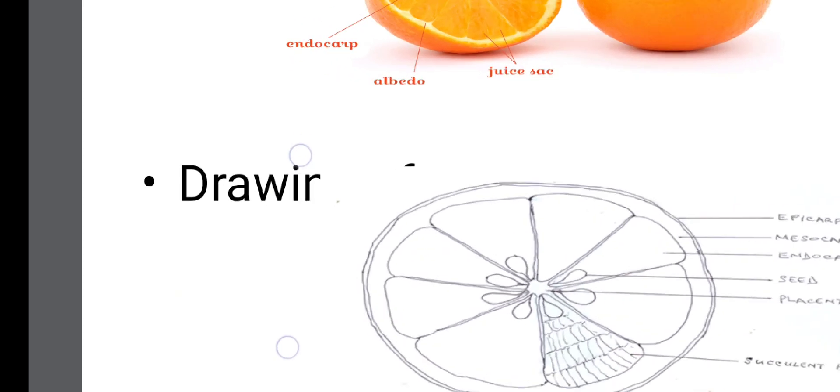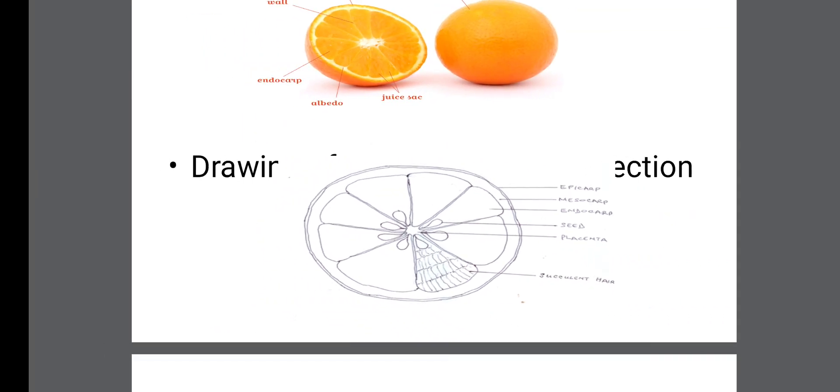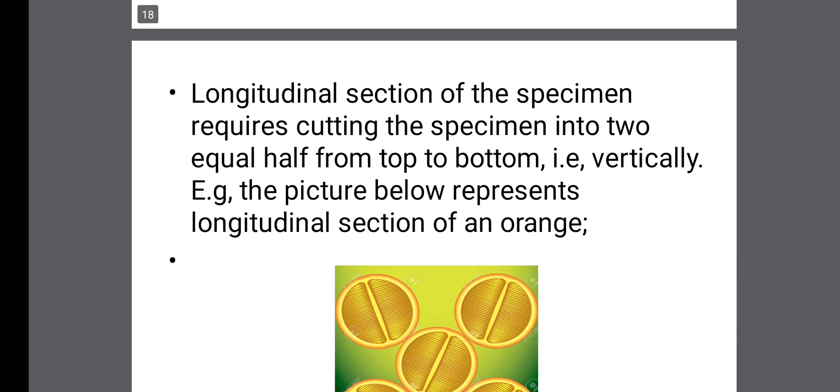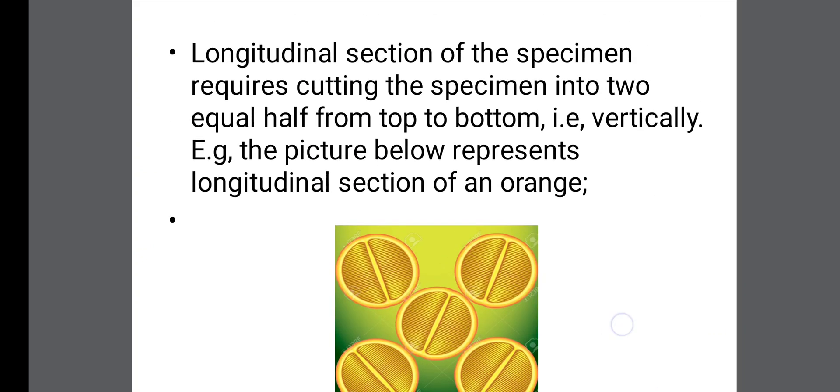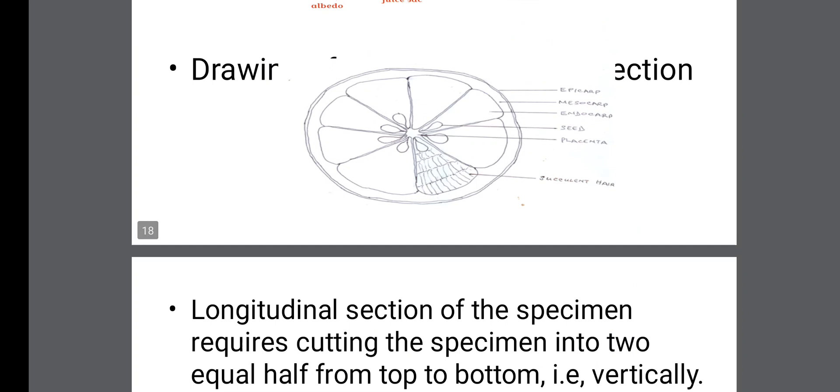Those that are interested in the diagram of an orange, of the transverse view of an orange, this is the diagram. It's very important that at this stage, you should be able to know how to draw essential practical items or specimens even before going to the exam hall. It still helps you even if you are still asked to draw what you see.